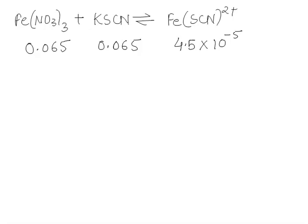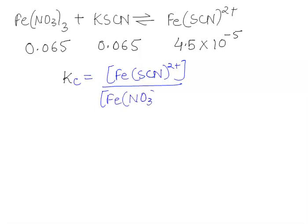Now we have been asked to work out the equilibrium constant for the reaction, which can be done using the expression KC equals concentration of products upon concentration of reactants, which is iron nitrate times KSCN.